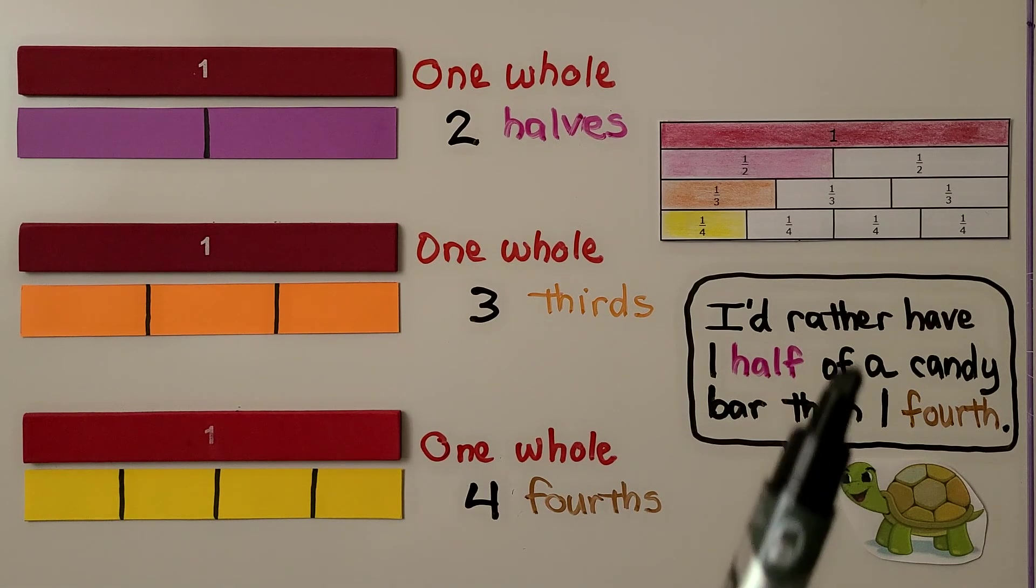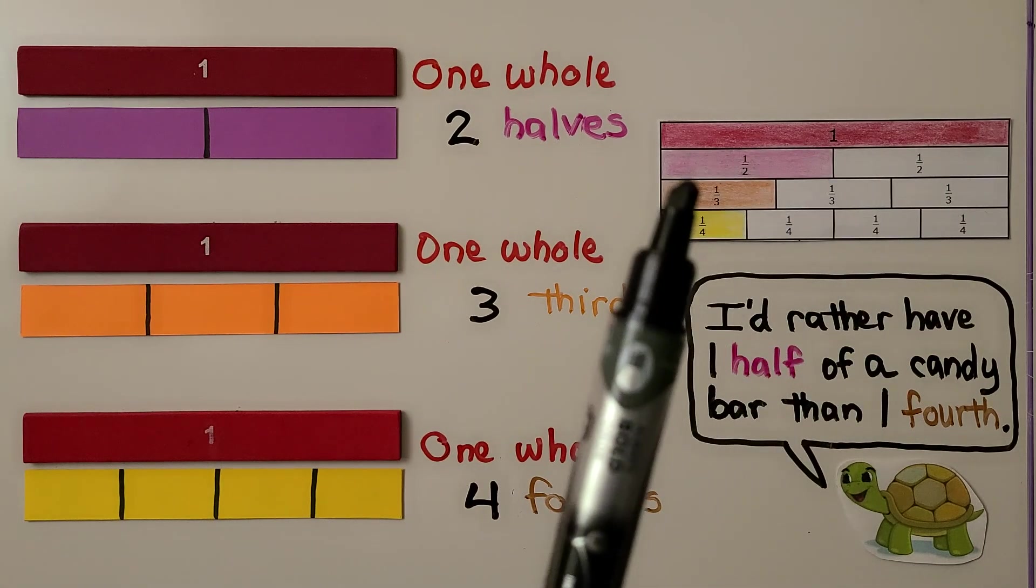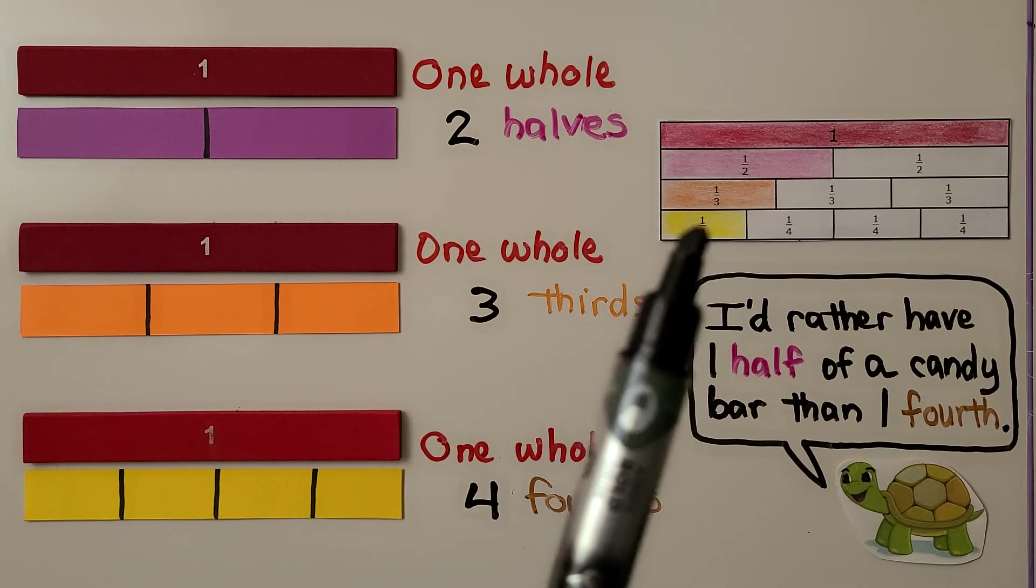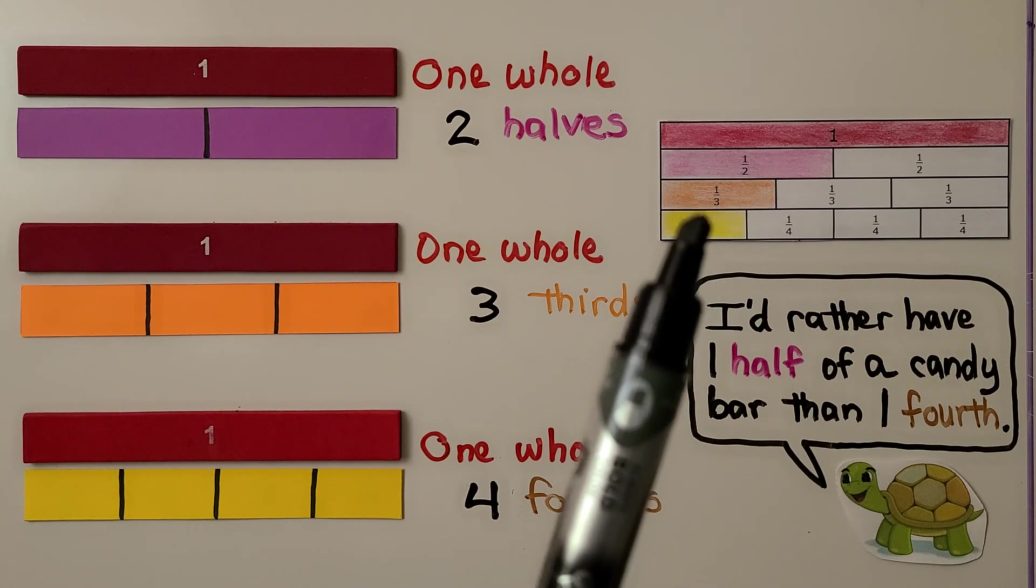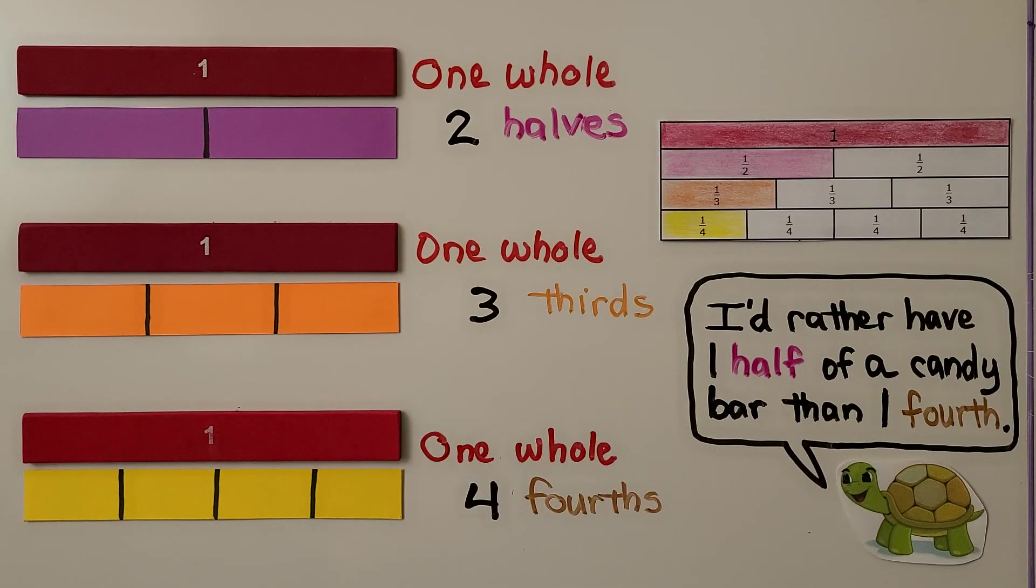And we can compare their size. Here's one whole red one. We can see a half is the pink one, a third is the orange one, and a fourth is the yellow one. Can you see that the half is bigger than the third and the fourth?